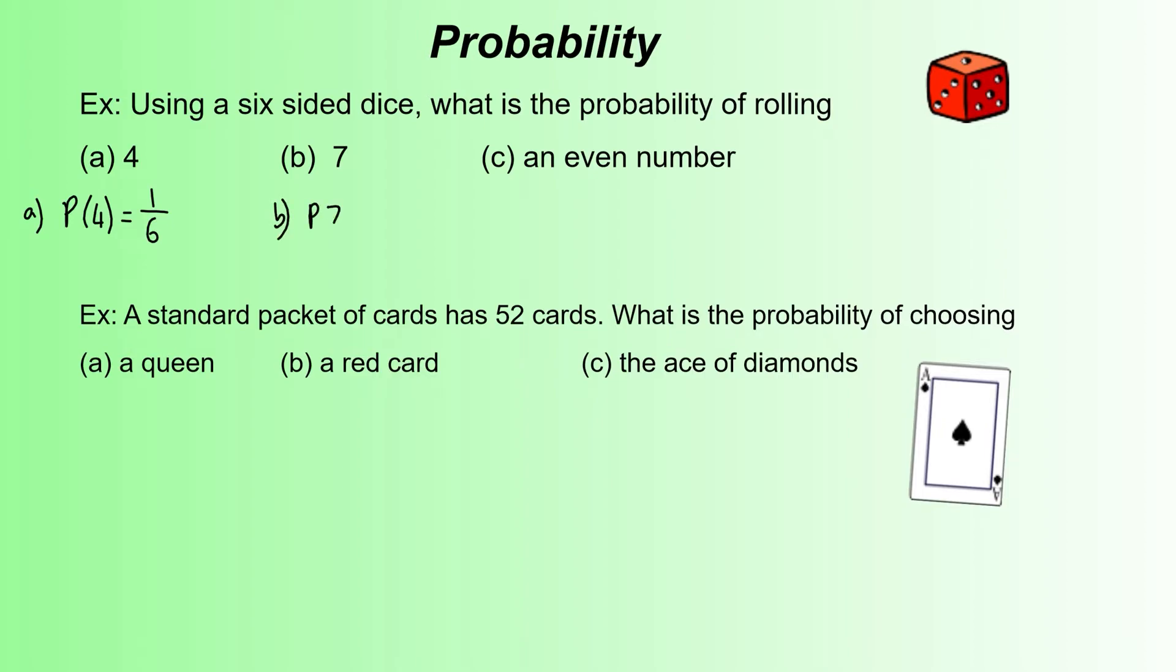Part B is picking a 7. On a regular six-sided die, there's no 7 on a normal dice, so we've got a 0 chance of rolling that. You could write 0 out of 6 first, but that would be - we would expect that to be simplified to just 0. 0 divided by 6 is still 0.